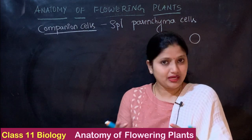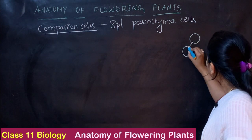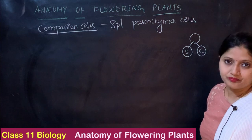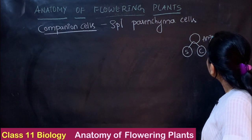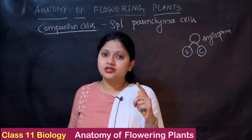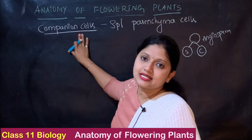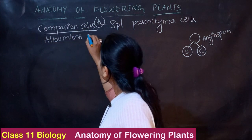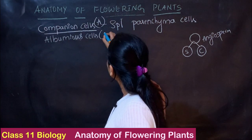When a meristematic cell divides into two, if one becomes a sieve tube, then the other one becomes a companion cell. This is in case of angiosperms. In gymnosperms, one becomes a sieve cell and the other becomes an albuminous cell. Companion cells are seen in angiosperms, whereas albuminous cells are seen in gymnosperms.